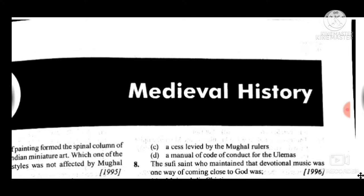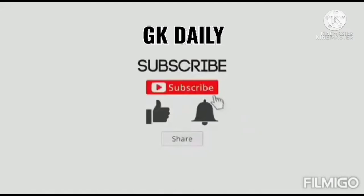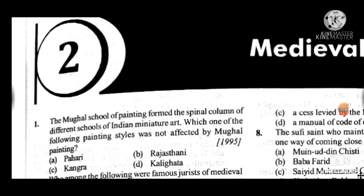This is the second part of the video lecture series. In this part we are discussing medieval history questions asked in the preliminary examination from 1997 to 2020. Let us start with question 1: The Mughal school of painting formed the spinal column of different schools of Indian miniature art. Which one of the following painting styles was not affected by Mughal painting? Answer is D, Kalighat.